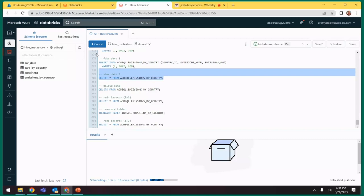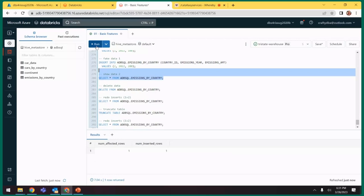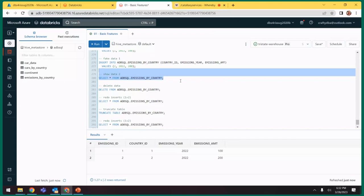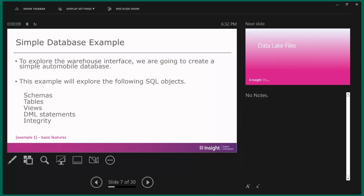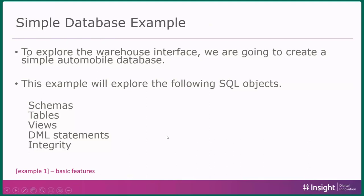This is a great time to pause. No questions so far - chat if you have any. We talked about the simple database example and went over how to create schema, tables, and views. DML statements - insert, update, delete - all work. Integrity only supports check constraints. The biggest thing also is when creating a table with an identity column, truncate does not reset the column counter, so you need to use create or replace table. Now let's talk about data lake files.